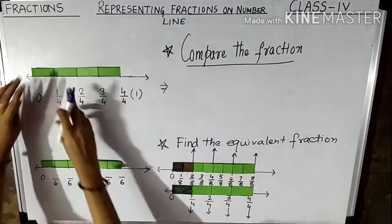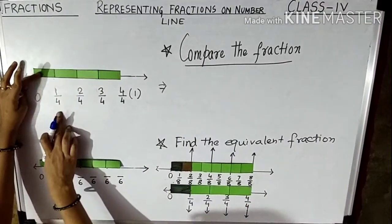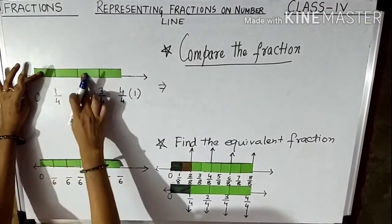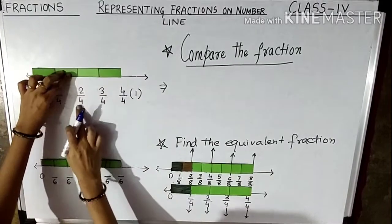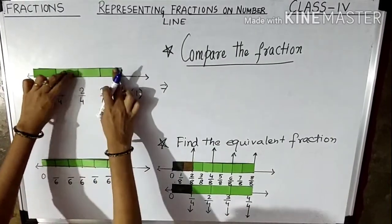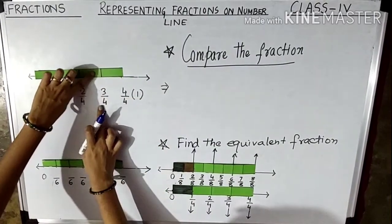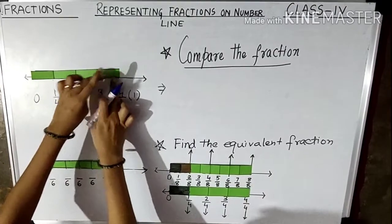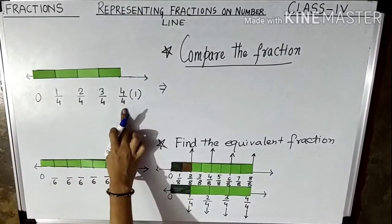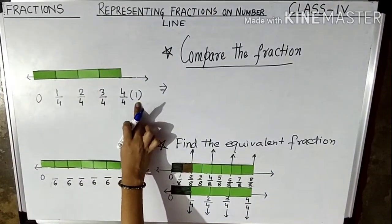The fraction of the first part is 1/4. The fraction of the second part is 2/4. The fraction of the third part is 3/4. And the fraction of the last part is 4/4, or you can write 1 as a whole.